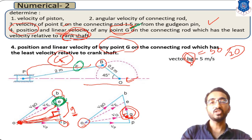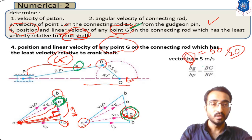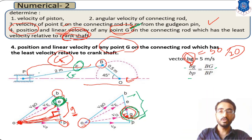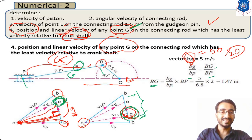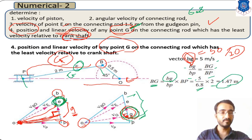We reverse the procedure: using the ratio small BG divided by small BP (from the velocity diagram) equals capital BG divided by capital BP (lengths on the connecting rod). BG on the velocity diagram is 5 meter per second and BP we calculated as 6.8. Using the total connecting rod length of 2 meters, we get the position of G at a distance of 1.47 meters from B.